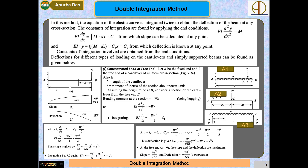At x = L (the fixed end), the slope dy/dx = 0. Applying this boundary condition gives C₁ = WL²/2. Substituting back: EI · dy/dx = −Wx²/2 + WL²/2. Therefore the slope is dy/dx = W/(2EI) · (L² − x²).